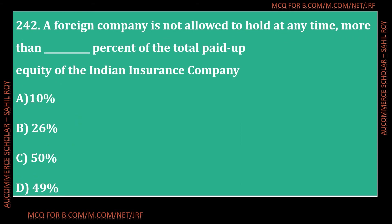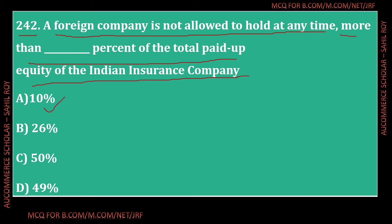Question number 242: A foreign company is not allowed to hold at any time more than dash percent of the total paid-up equity of the Indian insurance company. Options: 10%, 26%, 50%, or 49%. The correct answer is Option D - 49%. No foreign company can hold more than 49% of the total paid-up equity capital of any Indian insurance company at any point in time.